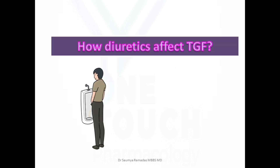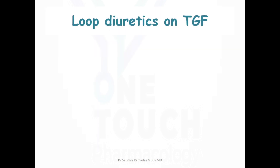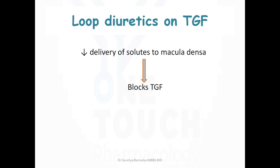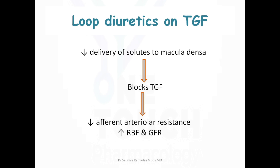How do different classes of diuretics affect the tubuloglomerular feedback? Loop diuretics, by inhibiting the sodium-2-chloride-potassium symporter, decrease the delivery of solutes to the macula densa. This blocks the tubuloglomerular feedback, causing efferent arteriole dilatation and an increase in renal blood flow and glomerular filtration rate if fluid replacement is adequate. This mechanism is believed to be via the release of prostaglandins — which is why NSAIDs reduce the efficacy of loop diuretics.